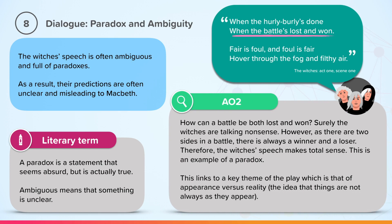At first you may read this and think that it doesn't make sense. After all, how can a battle be both lost and won? However, as there are two sides in a battle, there is in fact always a winner and a loser, and therefore the witches' speech makes total sense. This is an example of a paradox. This links to a key theme of the play, which is appearance versus reality — the idea that things are not always as they appear.